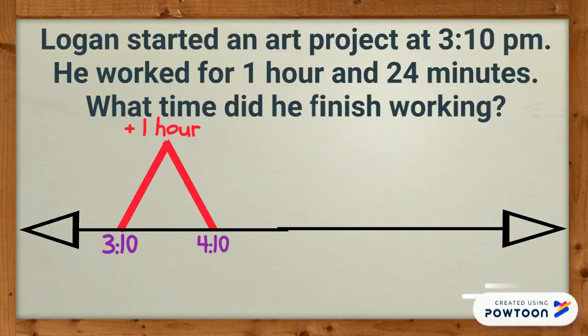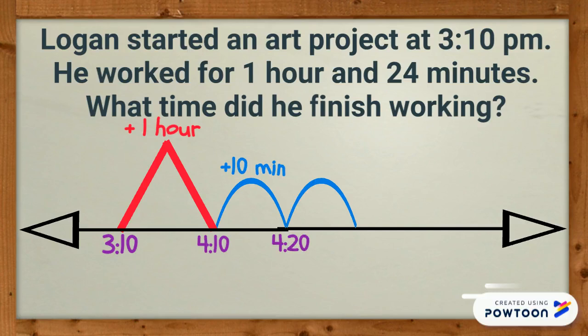Next, I will add groups of 10 minutes. Logan also worked for 24 minutes, so I will make two 10-minute hills. 4:10 plus 10 minutes equals 4:20, and 4:20 plus another 10 minutes equals 4:30.